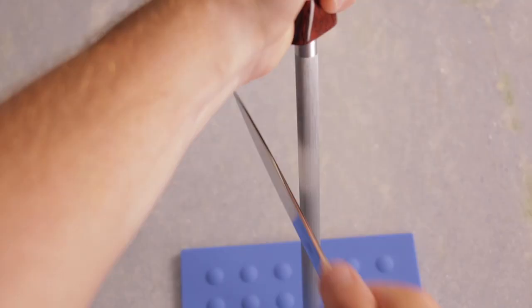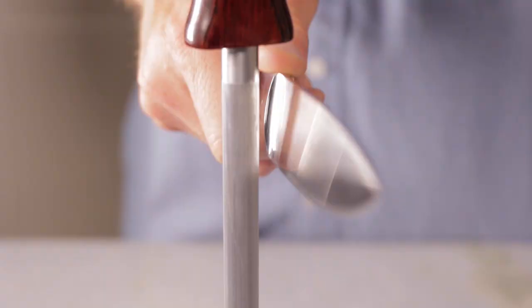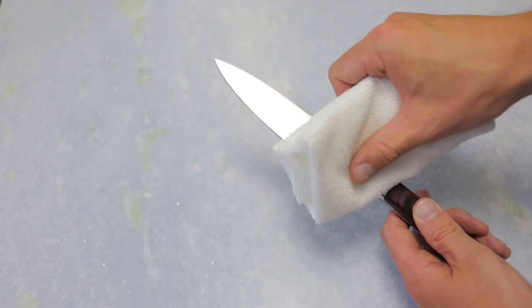When you have finished honing your knife, be sure to carefully wipe the blade down with a cloth to remove any steel fibers that may remain.